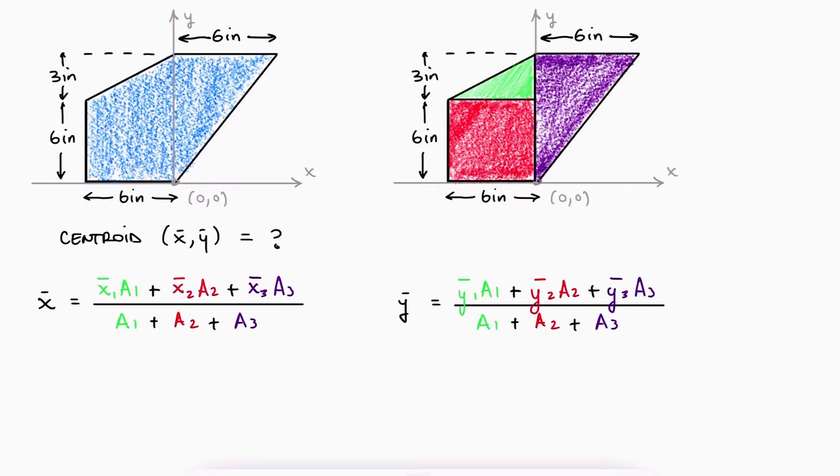With our datum being the y axis for x bar, x1 bar is the negative distance equal to one-third of the base of the triangle. The distance to the centroid of the red figure would be half of the side.